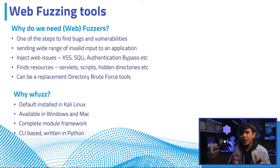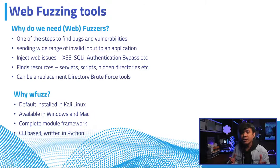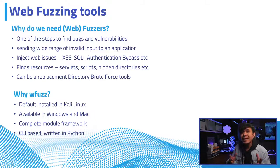It's also a tool used for finding resources such as servlet scripts, and it can also perform brute-force directory attacks — it can replace tools such as DirBuster and similar tools. You can also use fuzzing tools to look for IDOR. In short, web fuzzing is one of the easiest ways to find various web bugs and vulnerabilities.